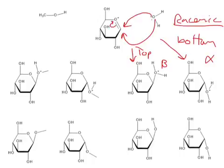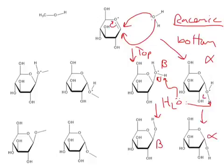Okay, now all we need to do is regenerate our catalyst. So we can do that by pulling a hydrogen off here or here. And we'll end up with our final products, our beta or our alpha.